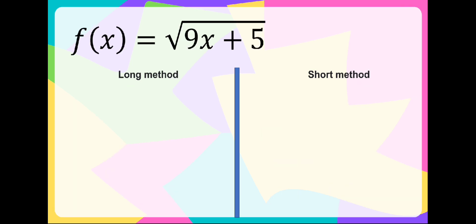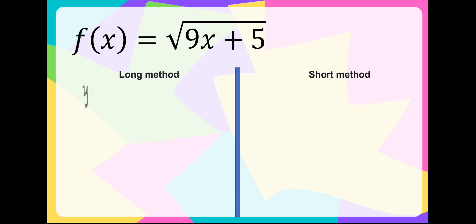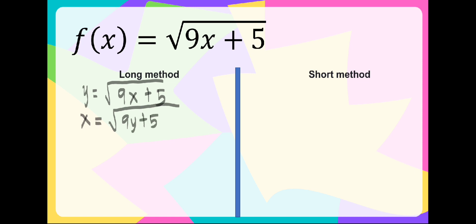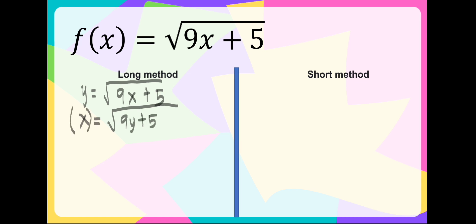Now let us get the inverse when the function is in square root form. Using the long method, let us compute for the inverse function. We have here y is equal to the square root of 9x plus 5. We interchange to get x is equal to the square root of 9y plus 5. In order to eliminate the square root, we have to square both sides. We now have x squared is equal to 9y plus 5.